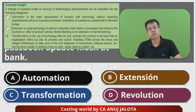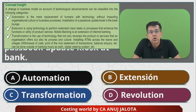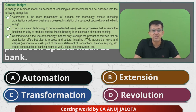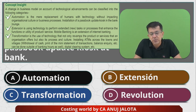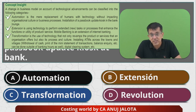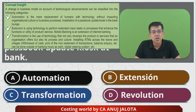Transformation is the use of technology that not only revamps the product or service an organization offers, but also its processes and culture — basically how you do a certain thing changes. ICA gives a good example: installing ATMs across towns and villages for cash withdrawal, mini statements, and balance inquiries. You could still withdraw money before, but how you withdraw it changes with ATM machines — the time taken is very less and your bank account gets debited automatically. That is transformation.